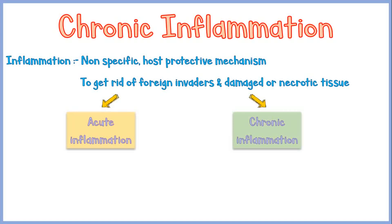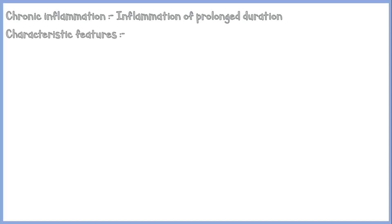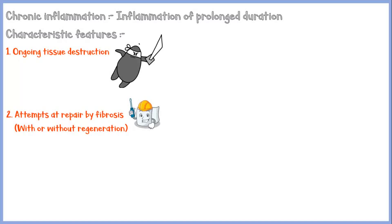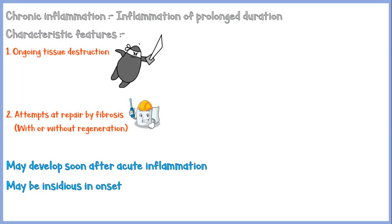I have done a separate lecture on acute inflammation. If you haven't watched it already, please watch it first so that this video would make more sense. Chronic inflammation is the type of inflammation of prolonged duration. There are two major characteristic features: ongoing tissue destruction and attempts at repair by fibrosis. The repairing process may occur with or without cell regeneration, depending on the involved tissue. Chronic inflammation may develop soon after an acute inflammatory response, or it may be insidious in onset. Whatever the onset, chronic inflammation is associated with significant morbidity due to ongoing tissue destruction. Therefore, controlling the chronic inflammatory reaction is essential to reduce further complications in certain disease conditions.